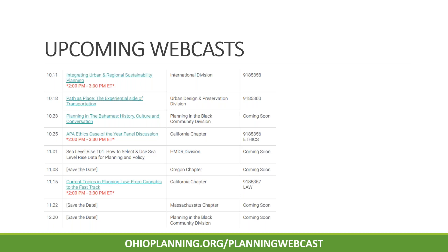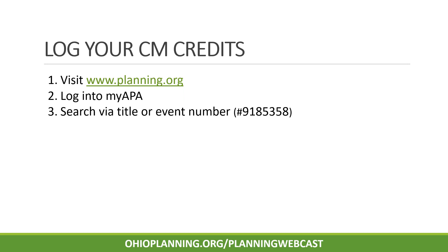On your screen is a list of our upcoming webcasts. You can register for these by heading over to our webcast webpage, ohioplanning.org/planningwebcast. This webcast has been approved for 1.5 CM credits for live viewing only. We do have some recorded webcasts available for distance education. To log today's CM credits, head over to planning.org, log into your MyAPA account, and search either by today's title or event number, both of which can be found on our webcast webpage.